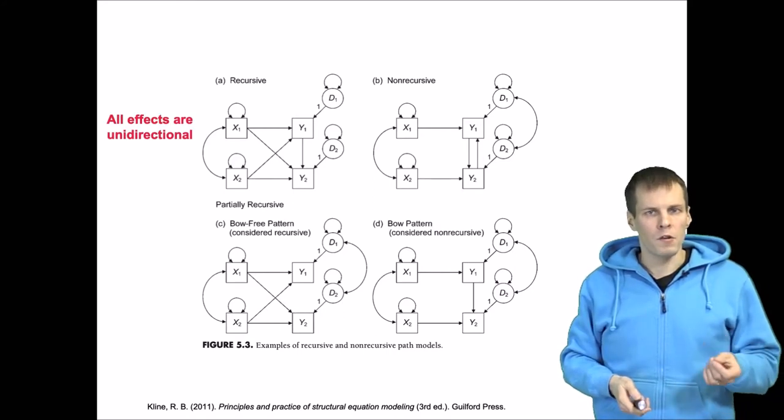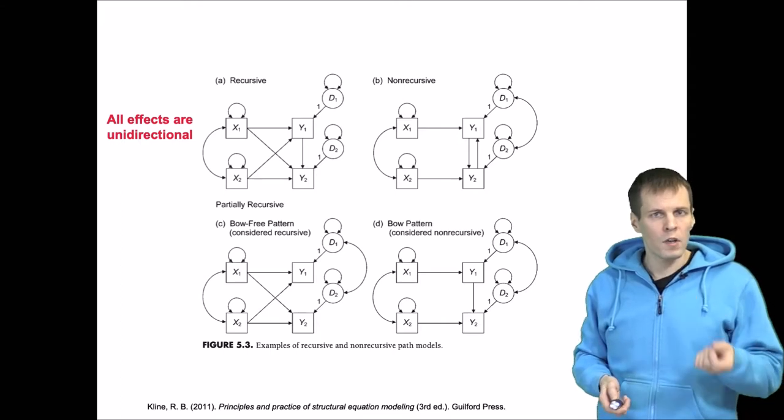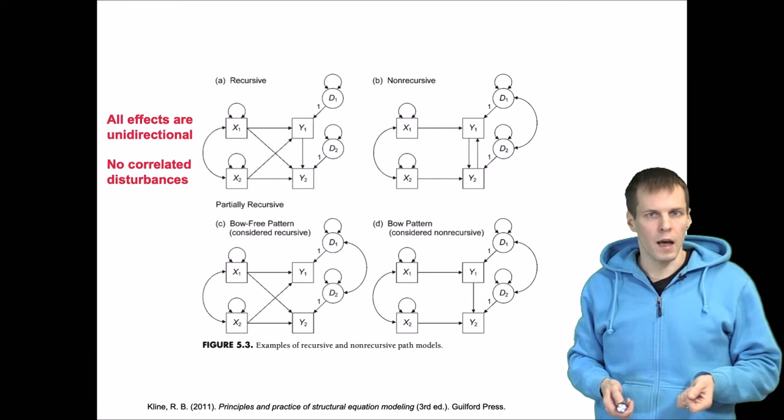The key feature of recursive models is that all effects are unidirectional, so there are no bidirectional relationships, and all disturbances or error terms are uncorrelated.